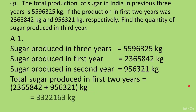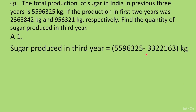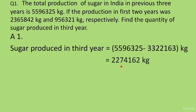When you add 2365842 and 956321, you get 3322163. That is the sugar produced in the first 2 years. Now to find the sugar produced in the third year, subtract: 5596325 minus 3322163. We get the answer as 2274162 kg. Answer: 2274162 kg.